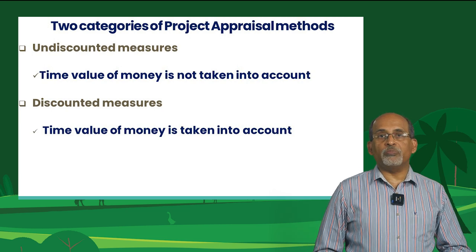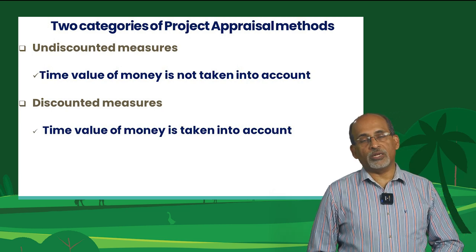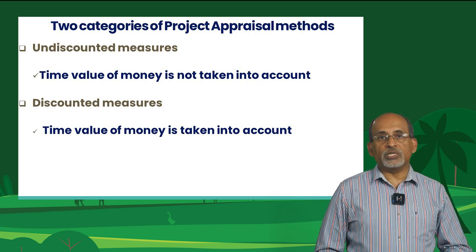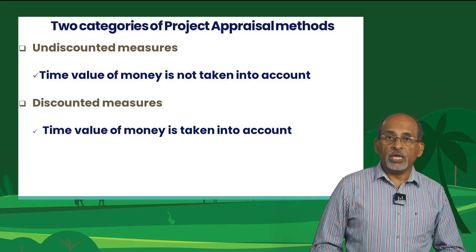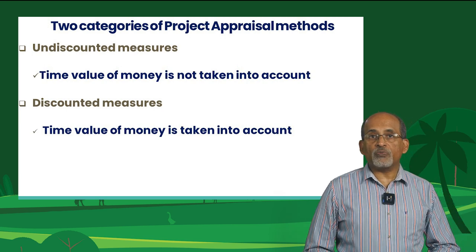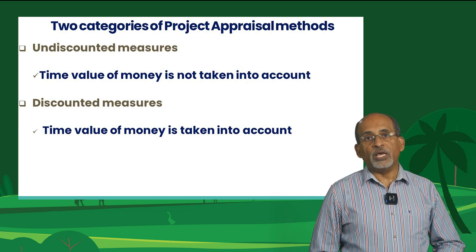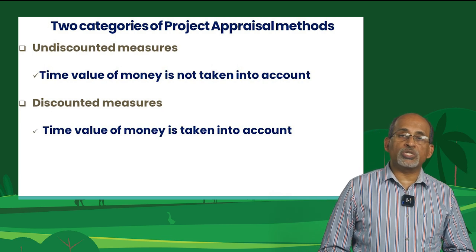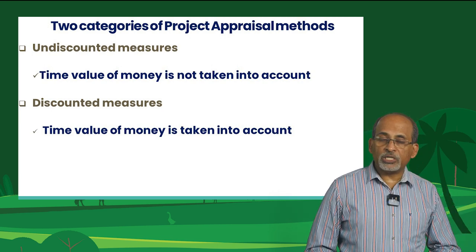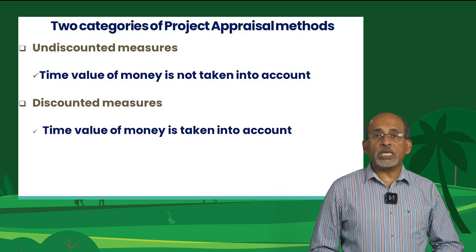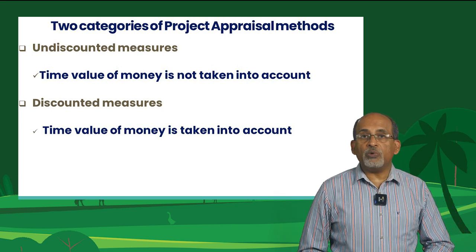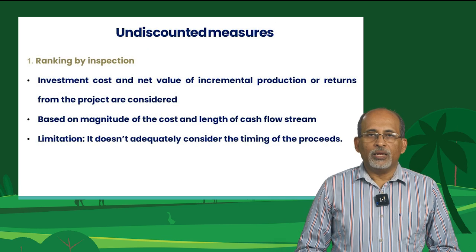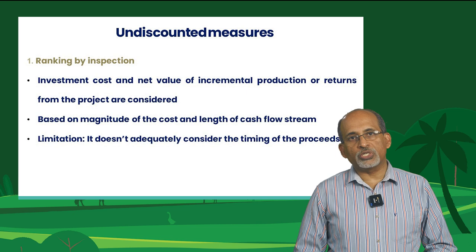The undiscounted measures don't take into consideration the time value of money, but simply compare the costs and returns and rank the project. In undiscounted measures, the cash flows of the investment are not discounted to estimate the present worth of the future cash flow. The undiscounted measures are: ranking by inspection, payback period, proceeds per rupee of outlay, average annual proceeds per rupee of outlay, and average income on cost.